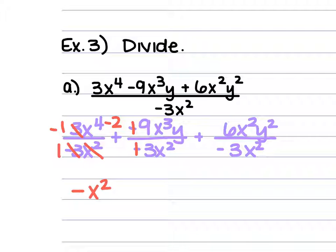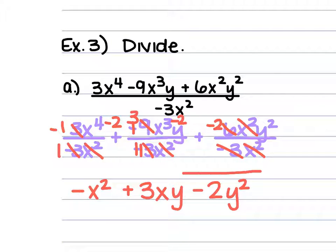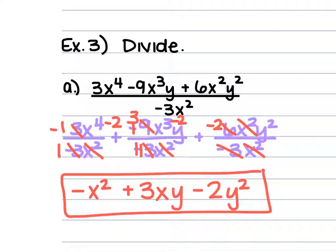For the second term, negative divided by negative gives positive; 3 goes into 9 three times, and x³ divided by x² leaves x, so we get positive 3xy. For the last term, 6 divided by negative 3 is negative 2, x² divided by x² cancels, and y squared stays, giving minus 2y squared. So our final solution is negative x squared plus 3xy minus 2y squared.